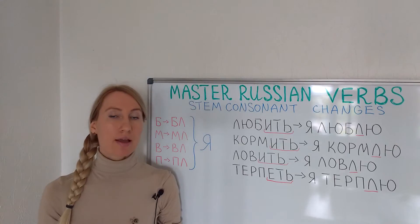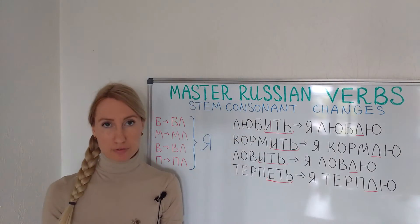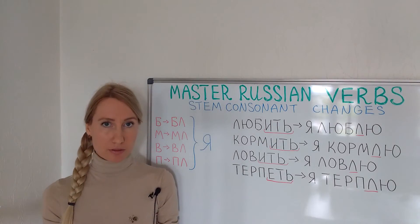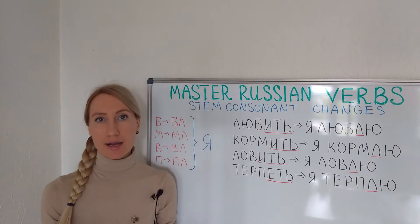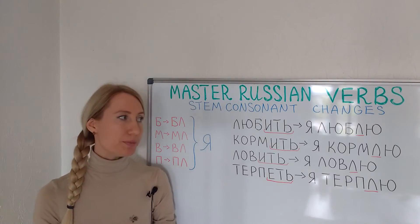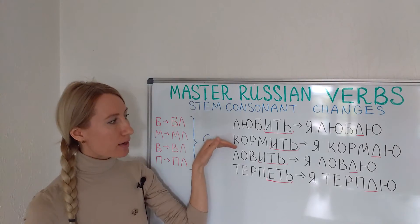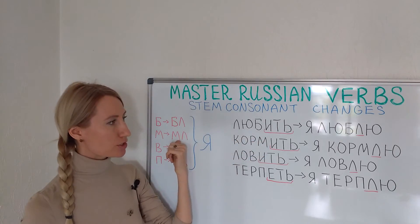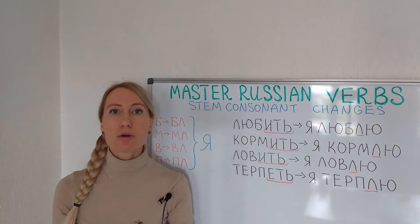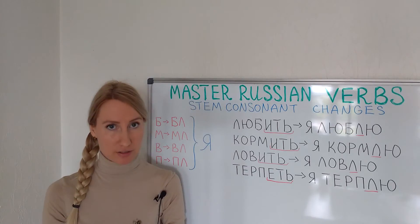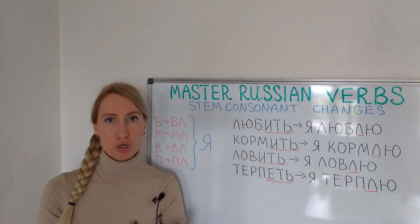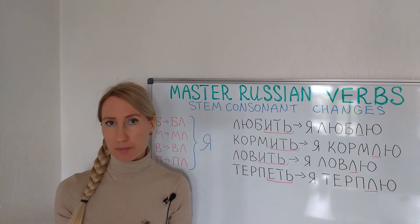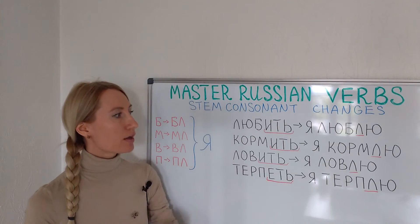The next one is кормить, to feed. The stem ends with М. Let's look at the transformation. So it will be я кормлю, I feed or I'm feeding, but ты кормишь, он кормит, мы кормим, вы кормите, они кормят. It's the second conjugation type.